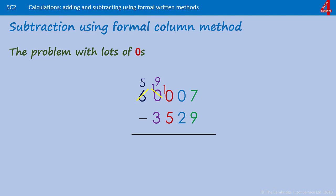We keep going to get to that seven: take one from that ten to make it nine and the next one ten, then take one from that ten to make it nine and add the one to the seven, making it seventeen. Seventeen take away nine is eight, nine take away two is seven, nine take away five is four, nine take away three is six, and then just the five — fifty-six thousand four hundred and seventy-eight.